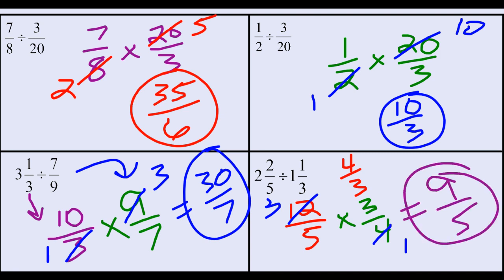That's it for dividing by fractions. Division by fractions is multiplication by the reciprocal because we're creating a total number of pieces determined by the denominator and grouping them according to the numerator. So instead of dividing by seven-ninths, it is multiplying by nine-sevenths.